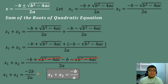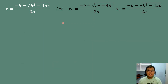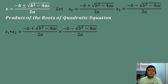So, to get the sum of the roots of the quadratic equation, all we need to do is divide negative B by A. Now, let's derive the formula for the product of the roots of the quadratic equation. We will just multiply the two roots of the quadratic formula.